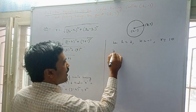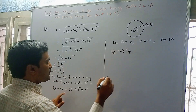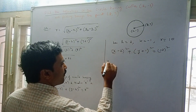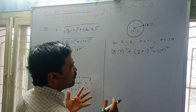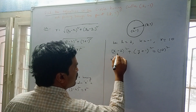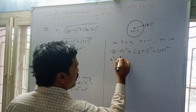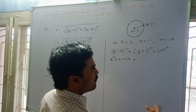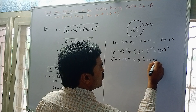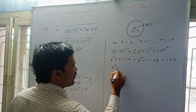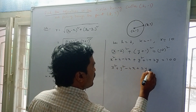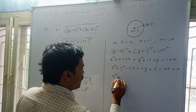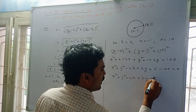Substituting, we get (x - 2)² + (y - (-1))² = 10². Expanding using (a - b)² = a² - 2ab + b²: (x - 2)² gives x² - 4x + 4, and (y + 1)² gives y² + 2y + 1. So x² + y² - 4x + 2y + 4 + 1 = 100. The constants 4 + 1 = 5, and moving 100 to the left gives us x² + y² - 4x + 2y - 95 = 0.